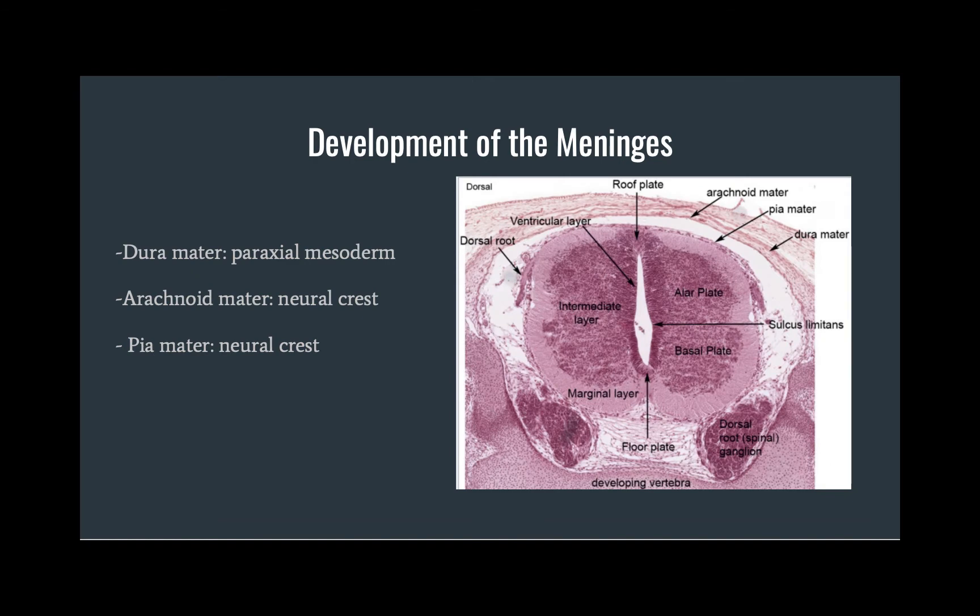Before diving into the embryological development of the meninges, I want to iterate that the exact timeline and sequence of events is unknown. However, we do know that it follows completion of neurulation — the cranial neuropore closes at day 25 and the caudal neuropore closes at day 28, marking the end of neurulation.